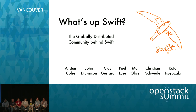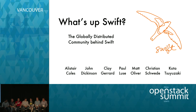A new piece of work that's been started is putting in place encryption for data at rest. While everyone's been busy on erasure coding, Janie Richling from IBM has been in stealth mode moving that work along, which has been great. I hope we see a lot more activity on that during the next cycle. I'm also working on container sharding — there's a proof of concept out there, a spec, and a work session on it later.